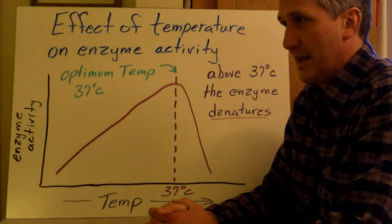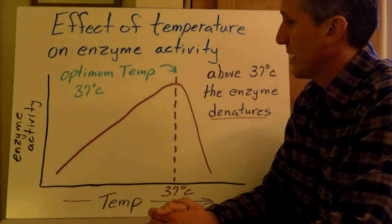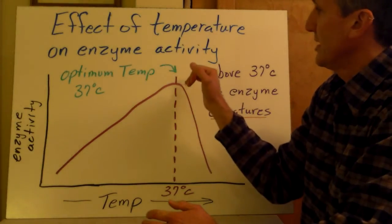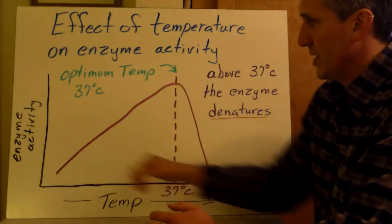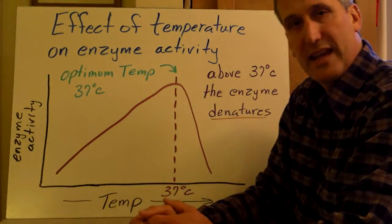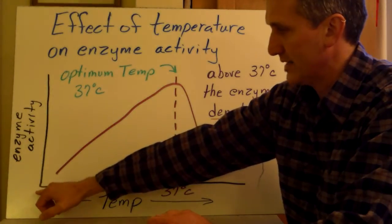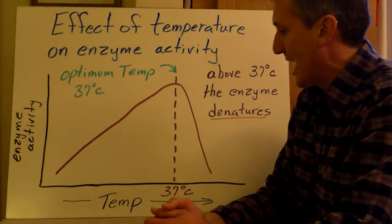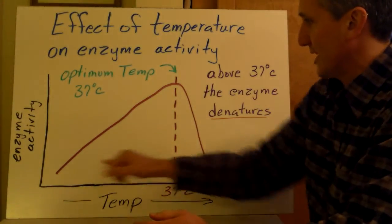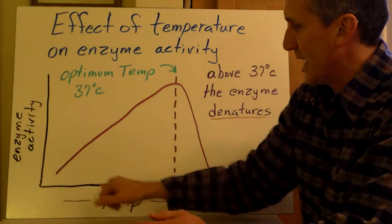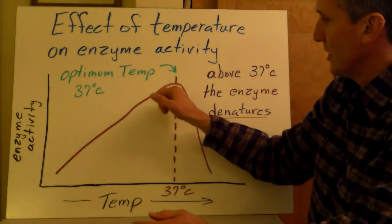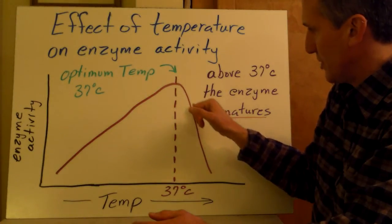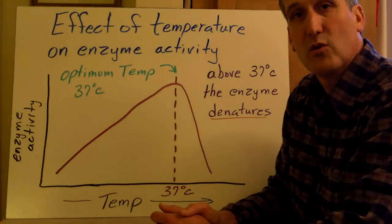So let's look at two examples of factors that affect enzyme activity. First we're going to look at the effect of temperature on enzyme activity. So we have a graph here. Along the y-axis we have enzyme activity increasing from lower enzyme activity to higher enzyme activity. And along the x-axis here, we have temperature increasing. So you'll see as the temperature increases, the enzyme activity increases to an optimum temperature, and then once it goes above the optimum temperature, you'll see the enzyme activity decreases rather quickly.